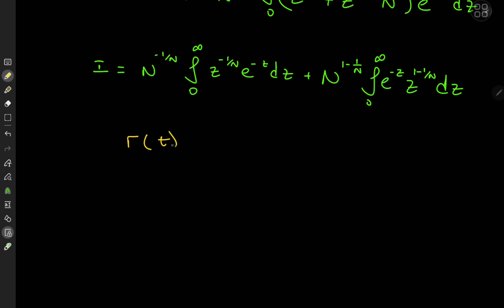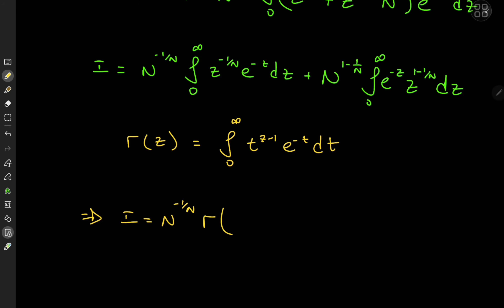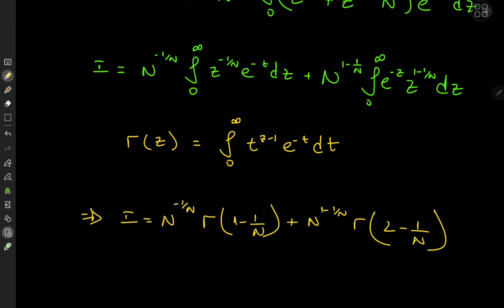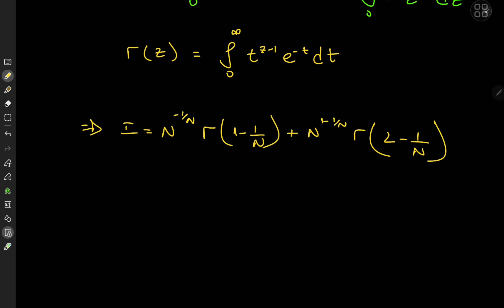The gamma function is defined as gamma(z) equals the integral from 0 to infinity of t to the z minus 1 times e to the minus t dt. We do have a couple of gamma function integrals here, so I equals n to the minus 1 over n times gamma(1 minus 1 over n) plus n to the 1 minus 1 over n times gamma(2 minus 1 over n).